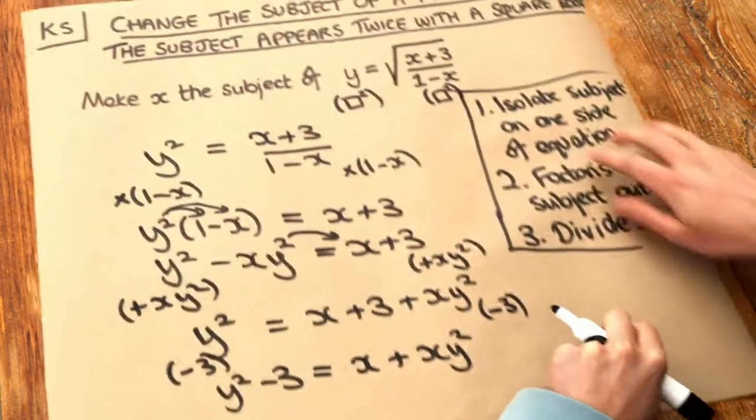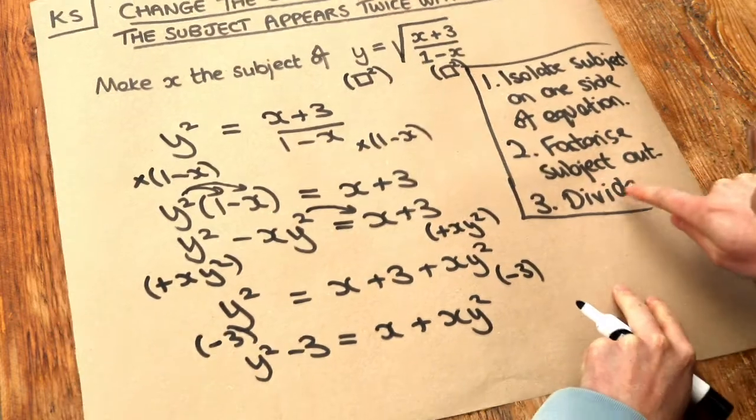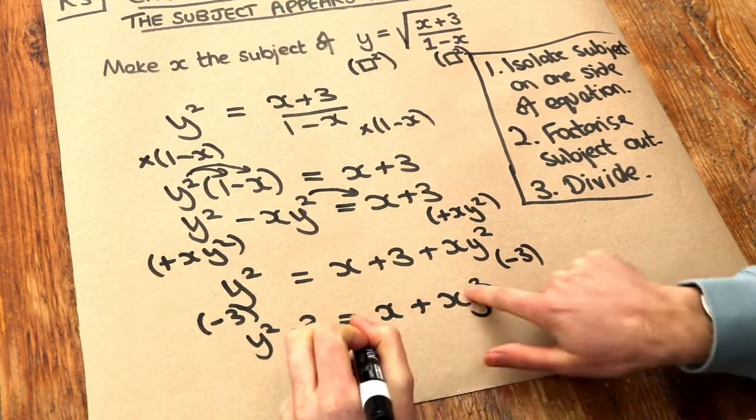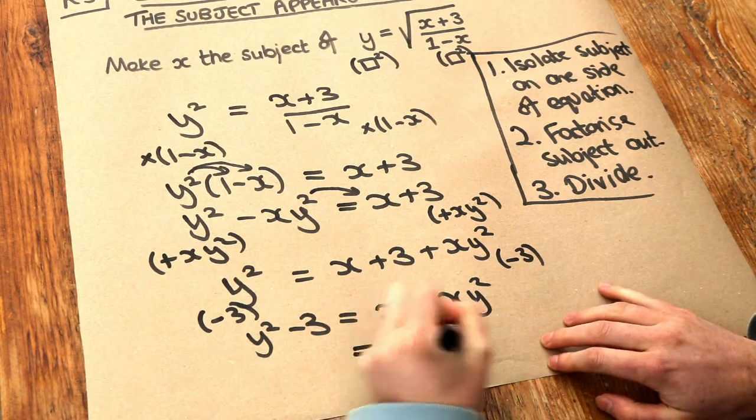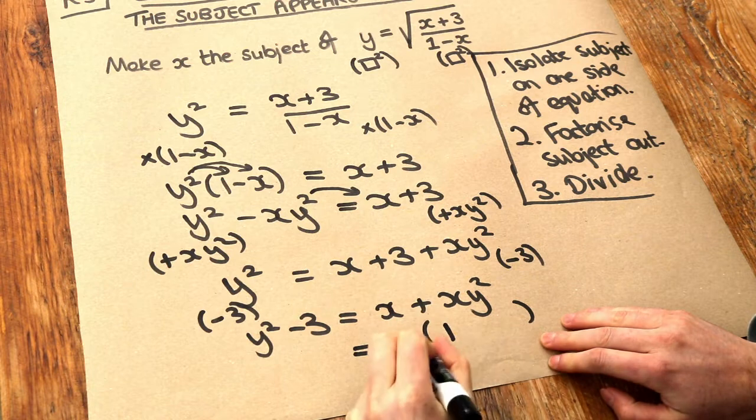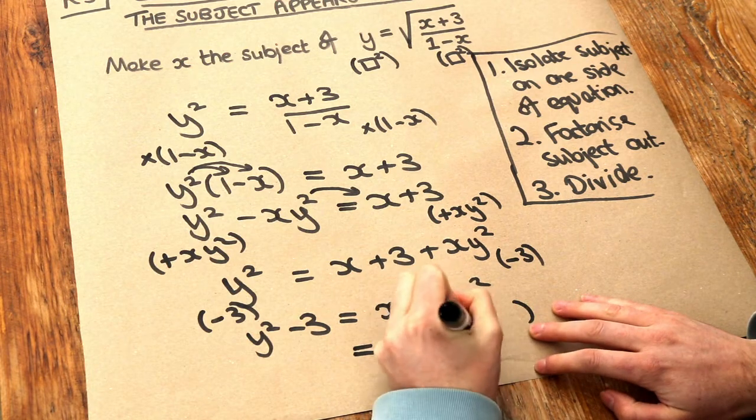Now we've finished step 1. We now need to factorise the subject out, step 2. So these have a common factor of the subject of x. And then the bracket would be, well, x times what is x, which is 1. And x times what is xy squared? Well, it's plus y squared.